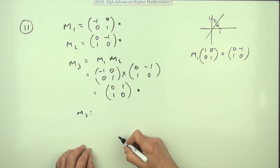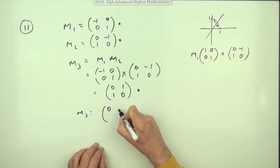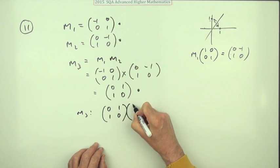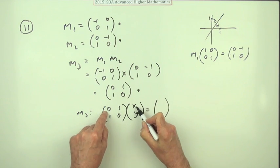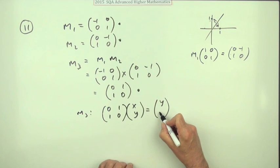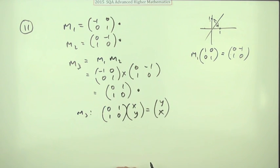But maybe you should set it out for this one. Let's see what it does. What does zero one, one zero do to the general point x, y? Well that'll be y and x. In other words, it's turned x into y and y into x.